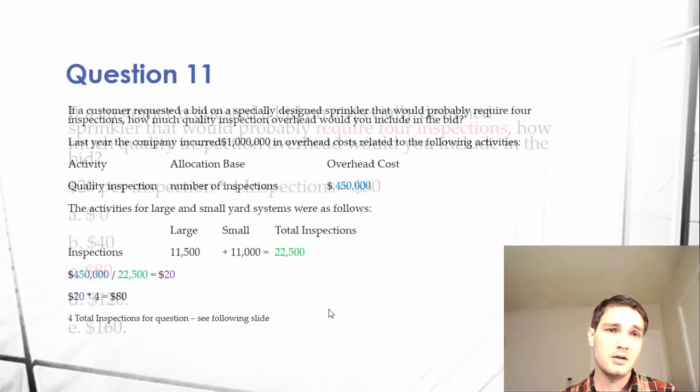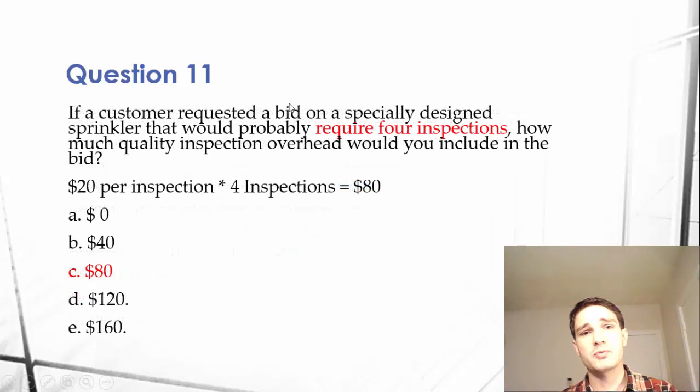We'll see on this next slide that it asks how much will four inspections cost. We just multiply the $20 by four. If a customer requests a bid on a specially designed sprinkler that would probably require four inspections, how much quality inspection overhead would you include in the bid?